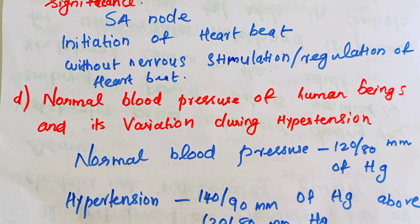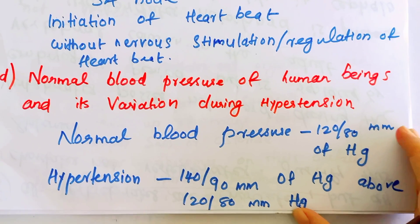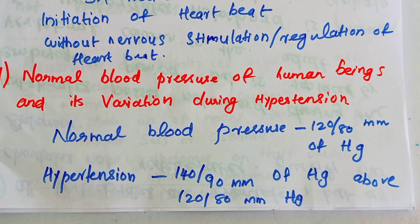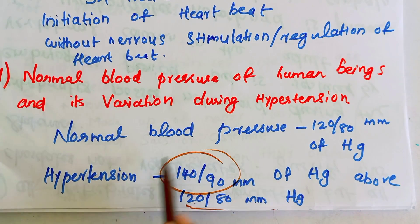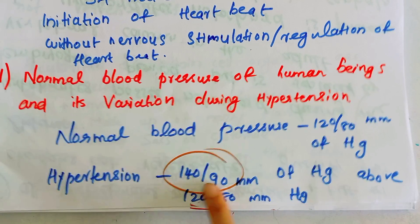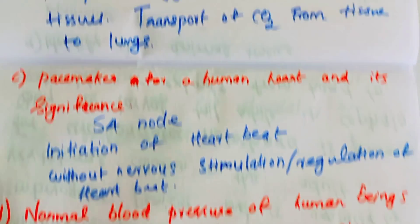Normal blood pressure in human beings is about 120/80 mmHg. During hypertension, the blood pressure rises above 140/90 mmHg. This is the variation in blood pressure during hypertension.